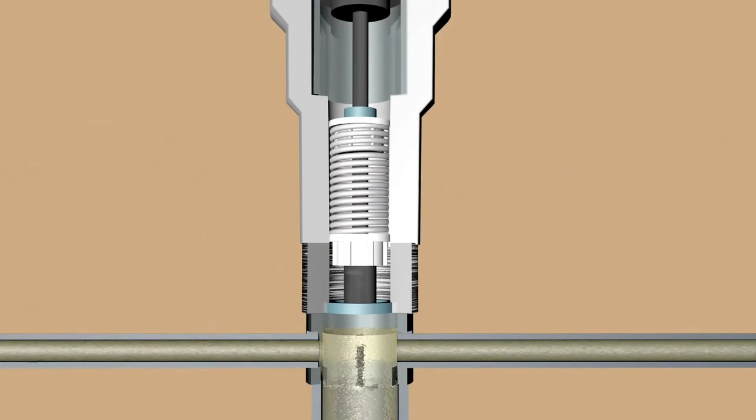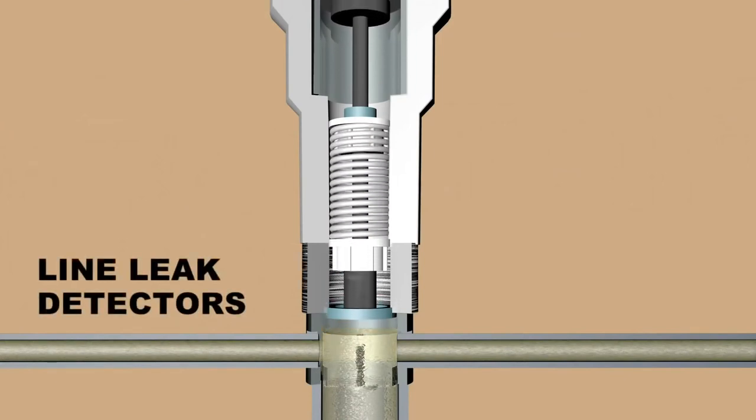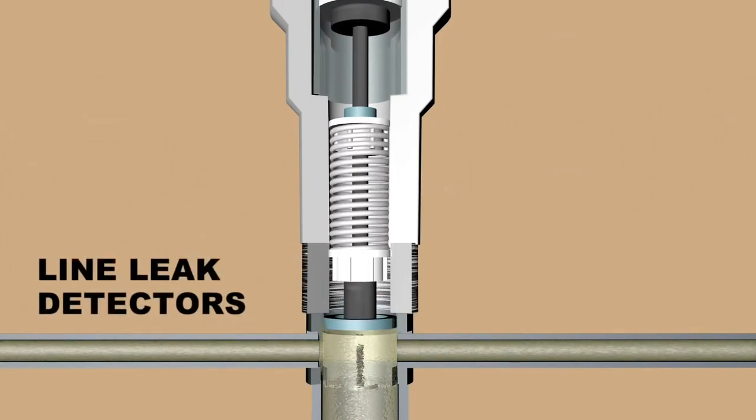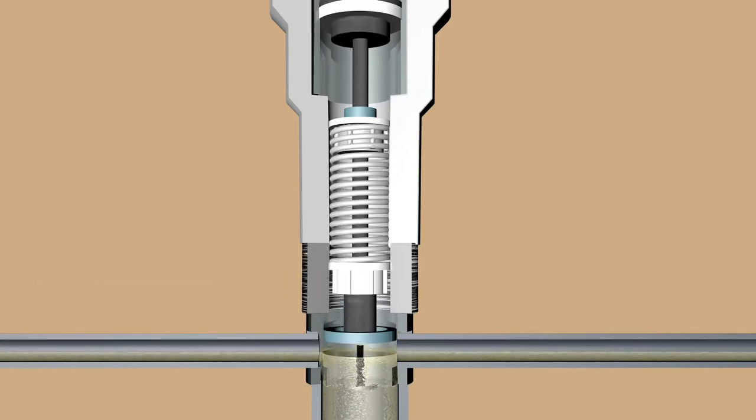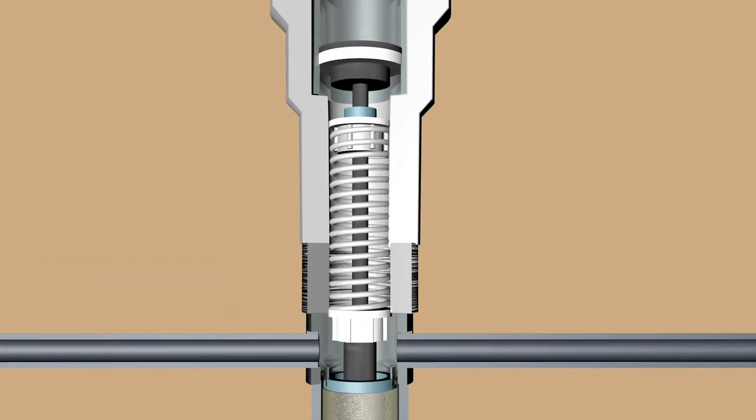In the pipes leading from the tank to the pump, line leak detectors use a spring-loaded probe to test fuel pressure. An unexpected change in pressure will trigger an alarm.